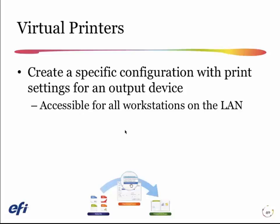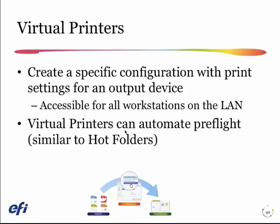So they know that when they have a job for the heavy-coated sheet, they print to the virtual printer called heavy-coated. When they have a job for uncoated, they print to the virtual printer called uncoated 24-pound, or what have you. We can also automate preflight through the virtual printer workflow.